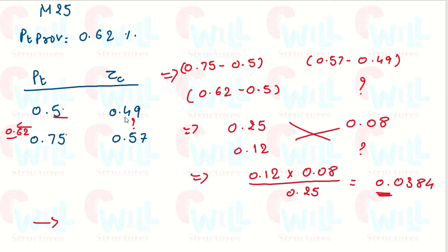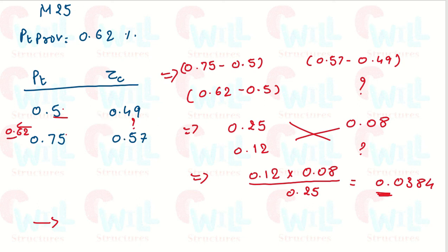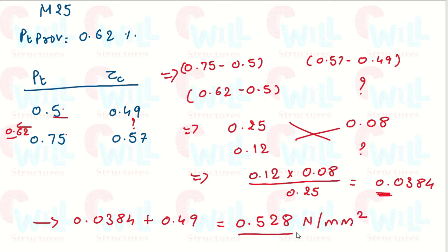Looking at the table, for PT = 0.5, tau c = 0.49, and for PT = 0.75, tau c = 0.57. As PT increases going downward, tau c also increases — 0.49 is less than 0.57. So for PT = 0.62, tau c must be more than 0.49. Therefore we add: 0.49 + 0.0384 = 0.5284, which rounds to 0.528 Newton per mm². This is the final value of tau c.